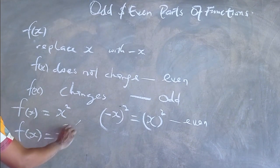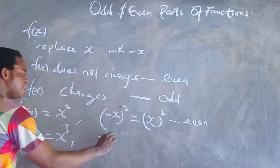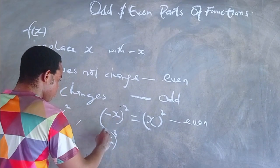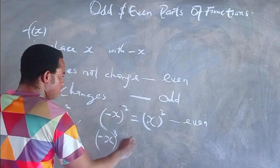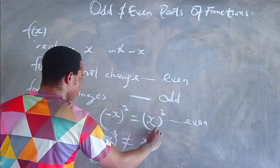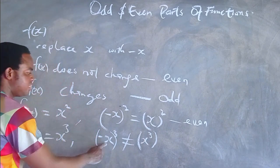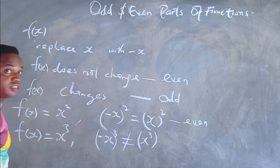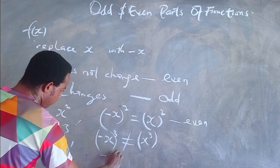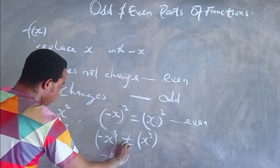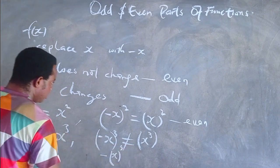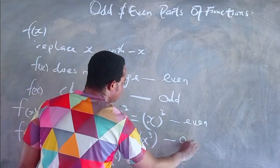Now look at f of x equals x raised to power 3. When we put negative x in place of x, you will notice that this is not equal to x raised to power 3. Instead, it is equal to negative x raised to power 3. So we say this type of function is an odd function.